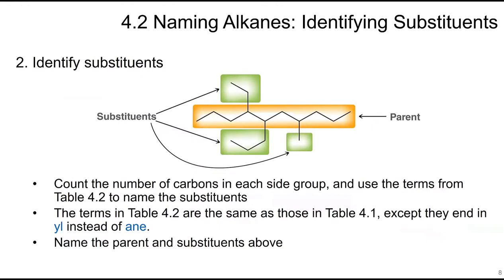After identifying the parent chain, identify the substituents. Count the carbons in each side group and name them using the same prefixes, but ending in '-yl' instead of '-ane.' For example, a ten-carbon parent is decane. A two-carbon substituent is ethyl, three carbons is propyl, and one carbon is methyl.